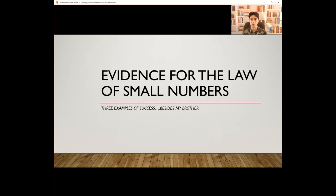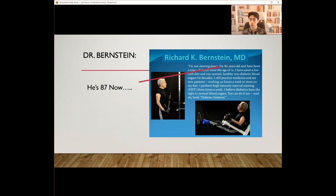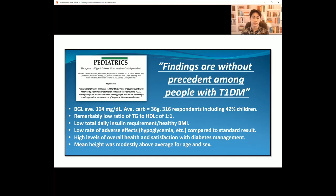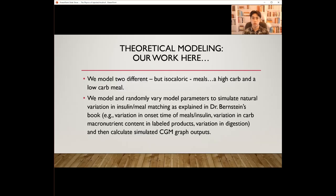Is there any evidence for the law of small numbers? The first example is Dr. Bernstein himself, who was diagnosed with type 1 diabetes at 12 years old. He's 87 years old now, still exercising, and still practicing medicine. The second proof is a paper published in the Journal of Pediatrics led by Harvard researchers, focusing on a group of type 1 diabetics who showed unprecedented glycemic control following a low-carb diet. The third example is our theoretical model: we model two different but isocaloric meals — a high-carb and a low-carb meal — and randomly vary model parameters to simulate natural variation in insulin and meal matching, calculating simulated CGM graph outputs.